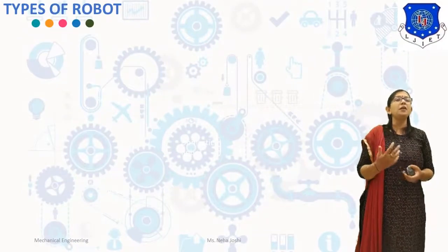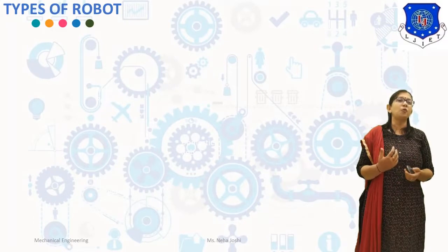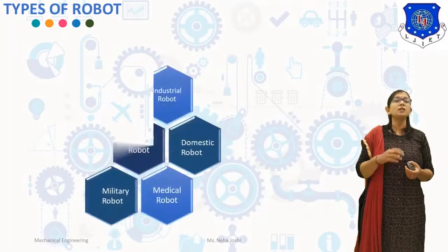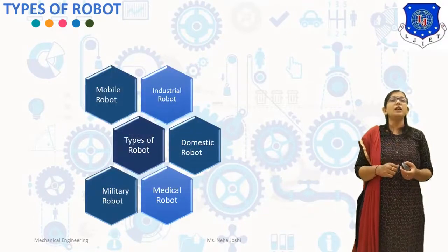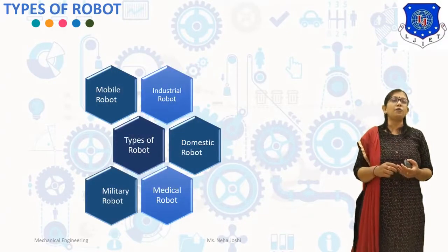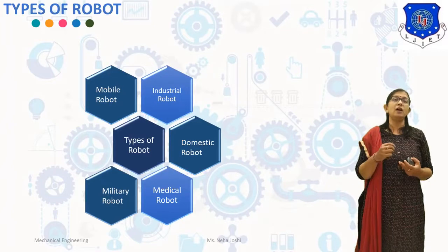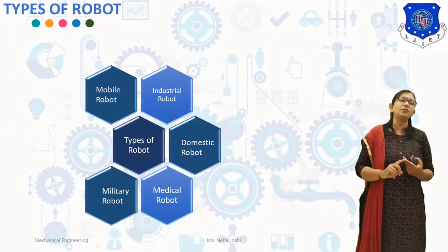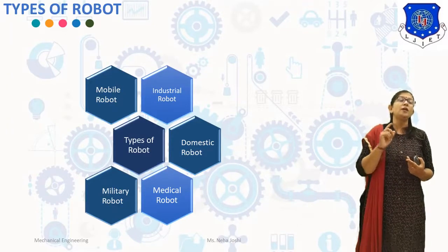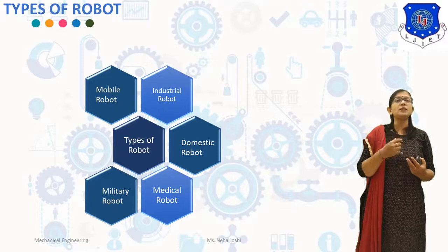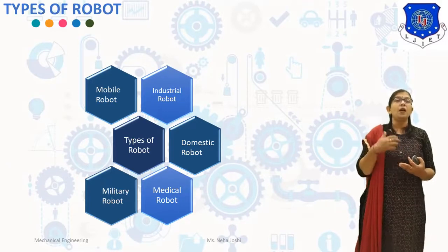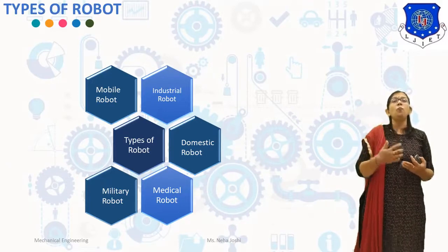Next, we will discuss the types of robots. There are generally five kinds of robots: mobile robots, industrial robots, domestic or household robots, medical robots, and military robots.